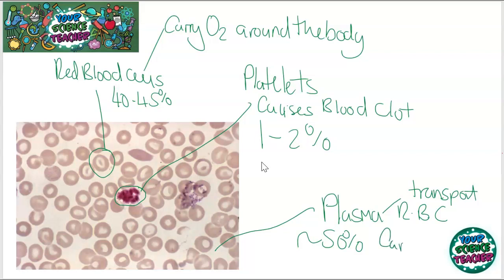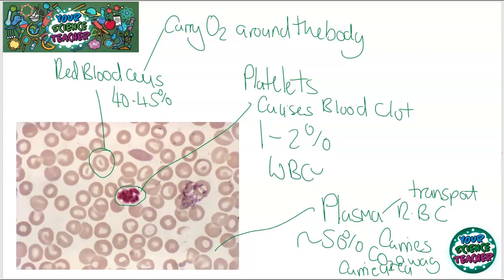For example, plasma carries CO2 away, and it also carries urea. Things that cells want carrying out of them will form in the plasma and get transported out of your body through it. There is also another component in blood: white blood cells, which only account for about 1% of the blood. And white blood cells fight infections.